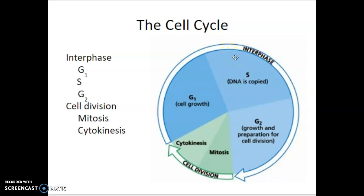The S phase stands for synthesis — here, DNA is copied. After the S phase comes the G2 phase, which is a second phase of growth, in preparation for cell division. Not only is the cell copying its DNA, it's starting to pack that DNA up and get ready to divide. It's also sorting out the organelles and getting its cytoskeleton restructured.